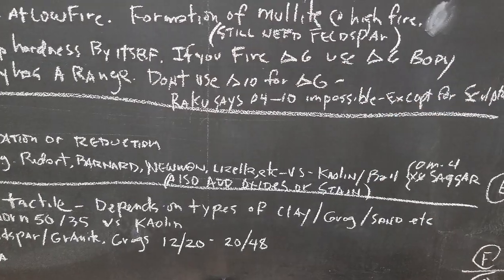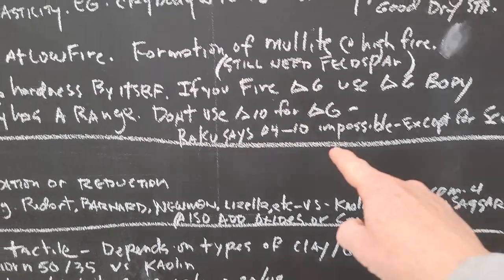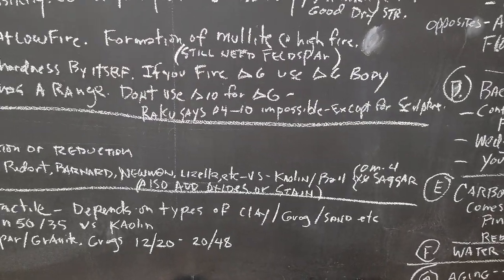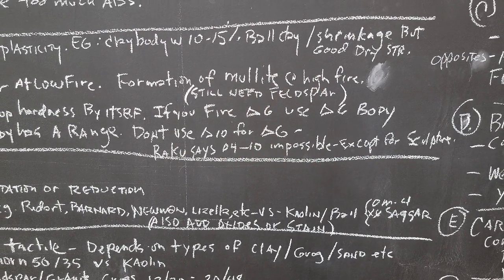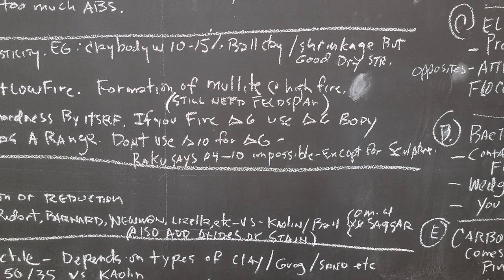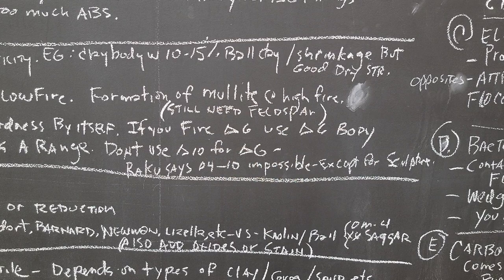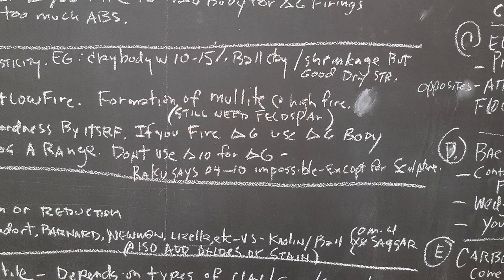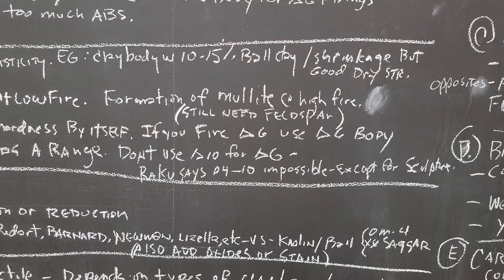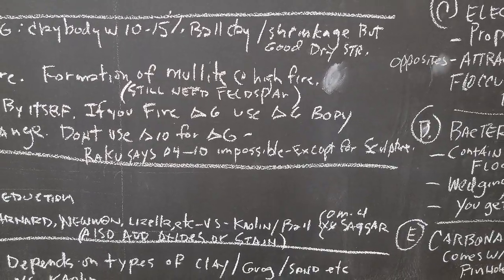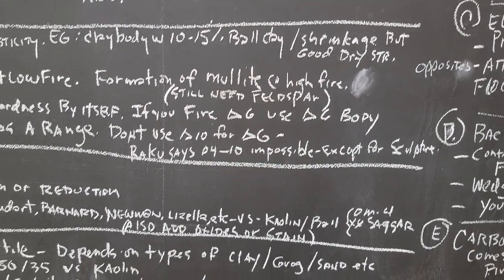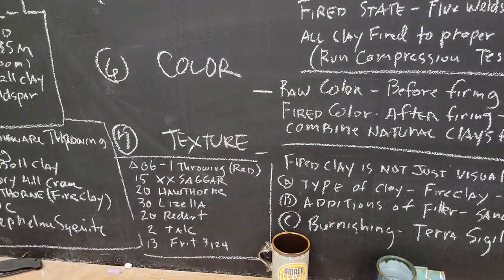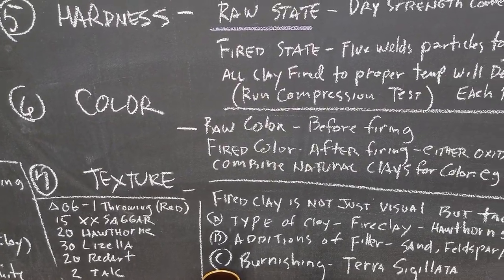All clay fired to the proper temperature will develop hardness, but each type has a different range. Don't use a cone 10 body at cone 6 — and a cone 04 to cone 10 range is only appropriate for sculpture, where absorption doesn't really matter. If you fired a cone 10 body to cone 04 for functional work it would probably absorb 18 percent water — very bad. For outdoor work you also have to consider freeze-thaw climates, where you need a very vitrified clay.